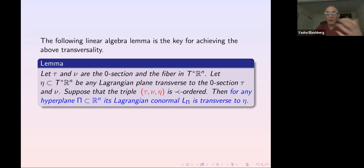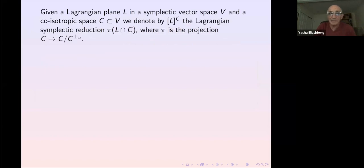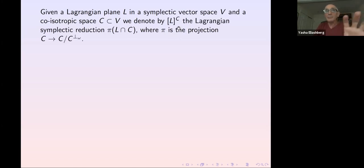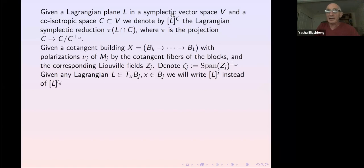A key linear algebra fact is: in T*ℝⁿ, take τ (zero section) and ν (normal fiber) and a Lagrangian η transverse to both, with the triple (τ, ν, η) positively ordered. Then for any hyperplane π in ℝⁿ, the conormal Lagrangian to π is transverse to η. This positivity condition is necessary and sufficient for the transversality to any hyperplane — the quadratic form is positive-definite and hence non-vanishing on any vector. This property is essential because in the cotangent building picture we project a Legendrian to one block, then cone that projection to a lower block, and we need to control transversality at each stage.